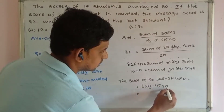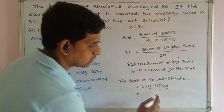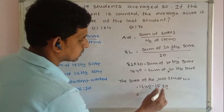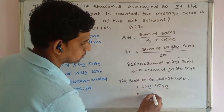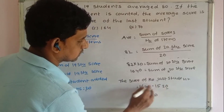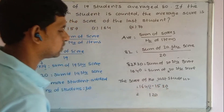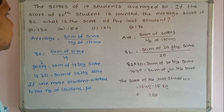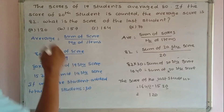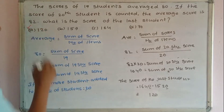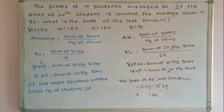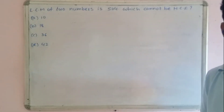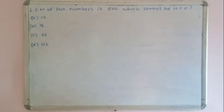Calculating: 0 minus 0 is 0, 4 minus 2 is 2, 6 minus 5 is 1. So the score of the 20th student is 120.